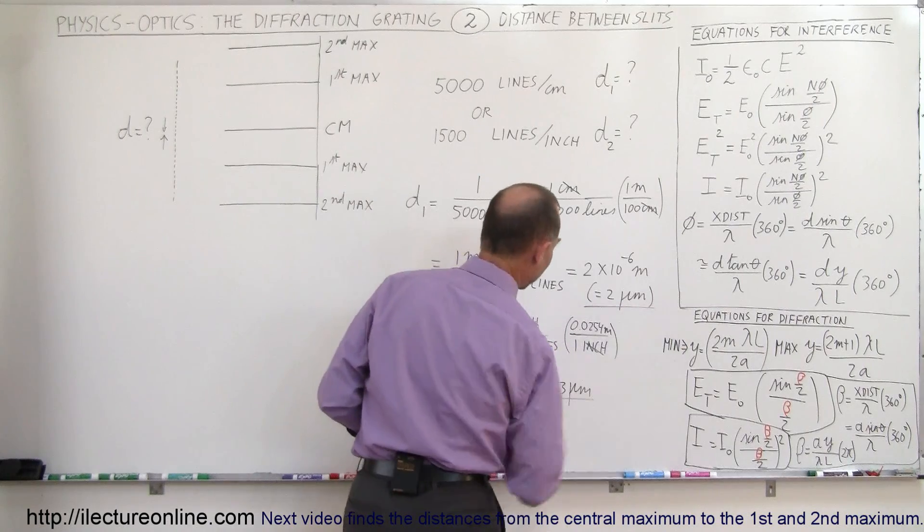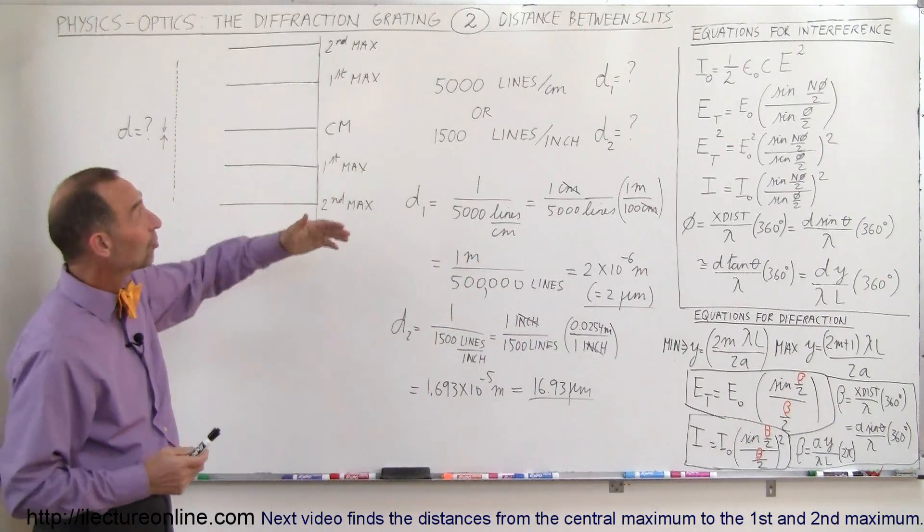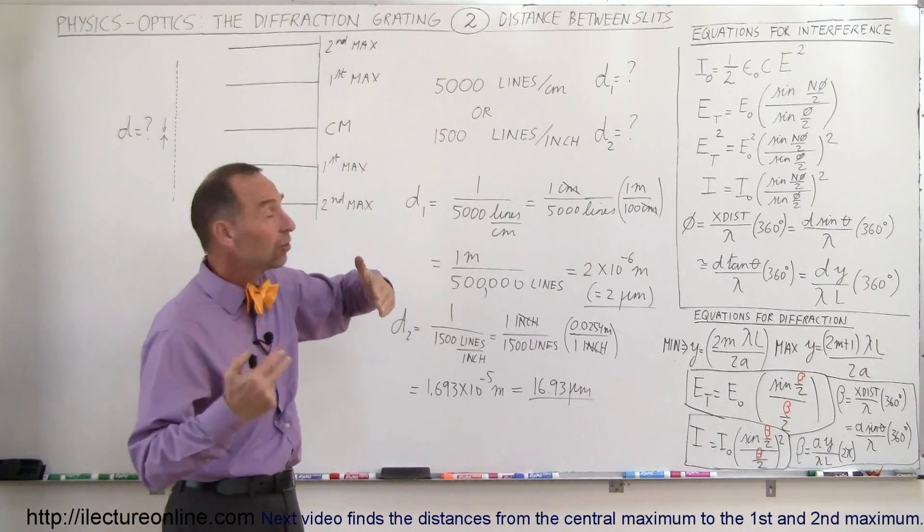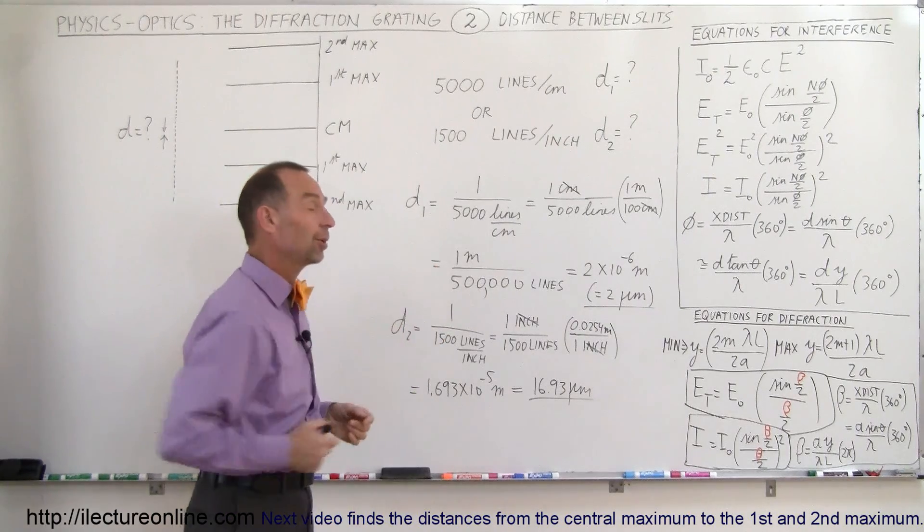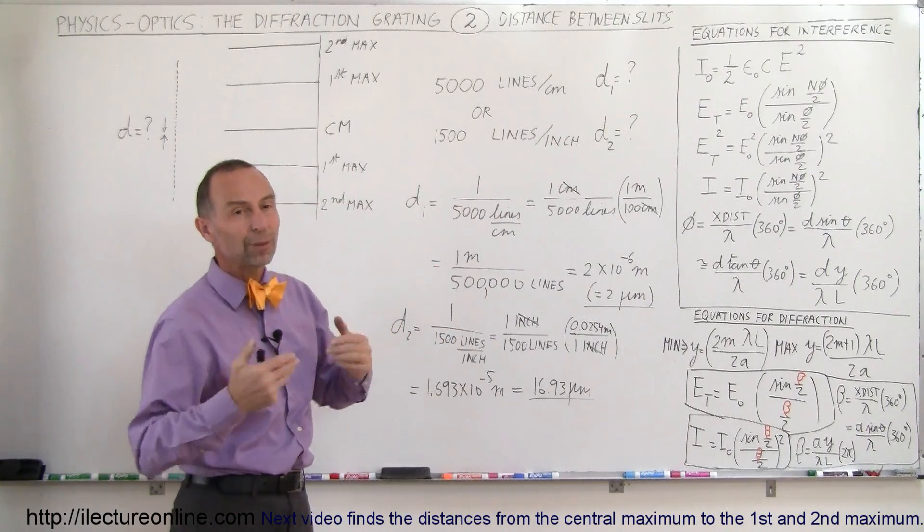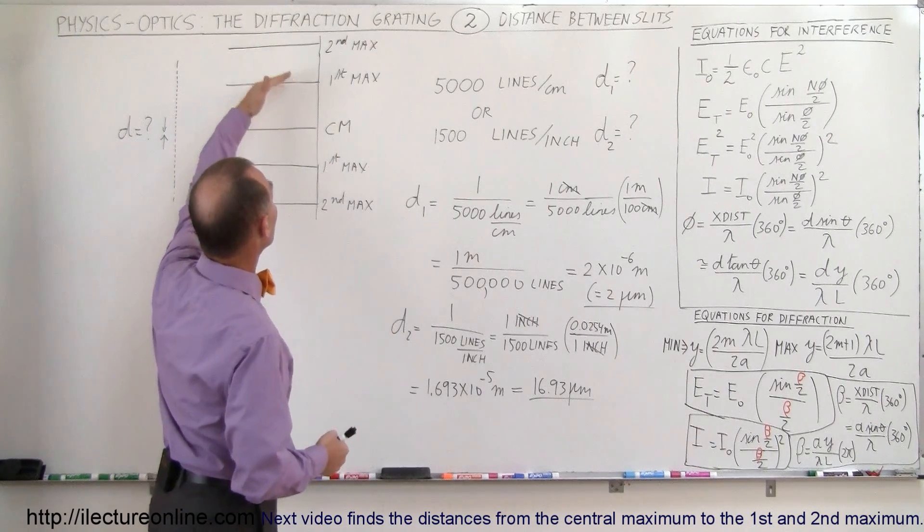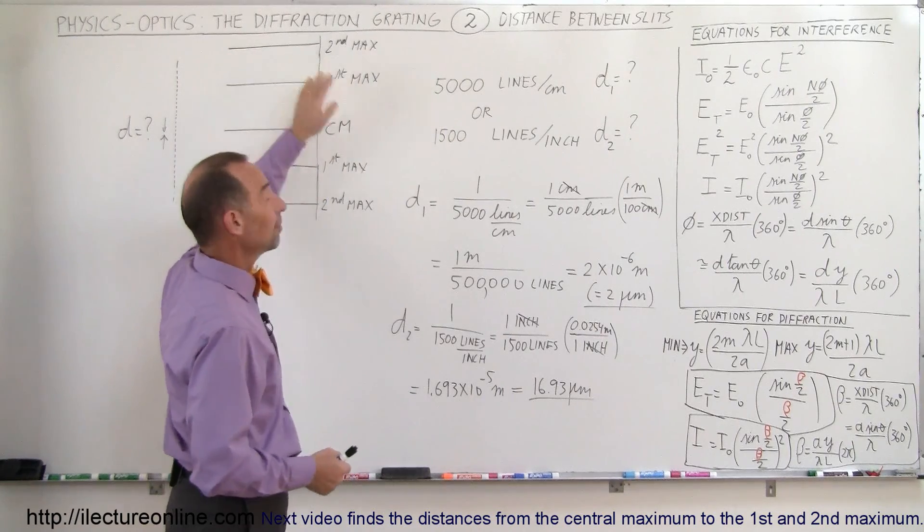So there we go. That's how we calculate the distance between two slits. We simply take the inverse of the number lines per centimeter, the number lines per inch, or however they give it to us. And then we convert from centimeters or inches to meters, and we have the separation distance d. At that point, we can then utilize that number to find out what the lookup angle is to find the first and second max, or what the distance is from the central maximum to the first max or the second max.